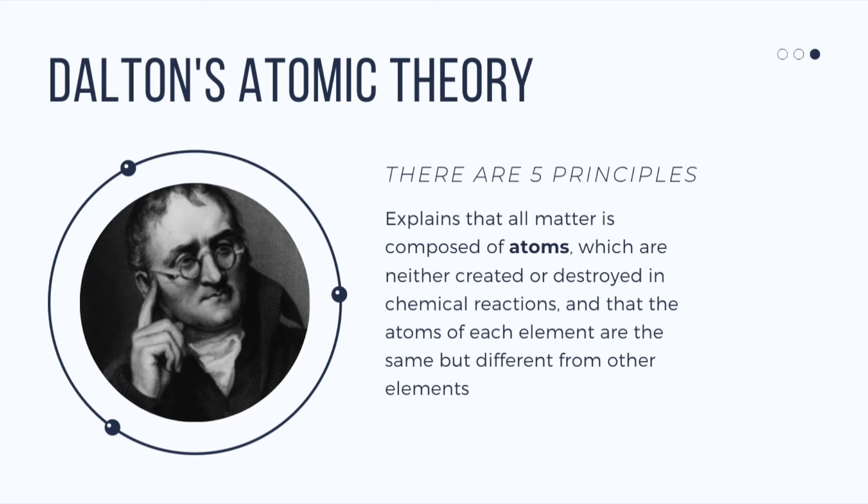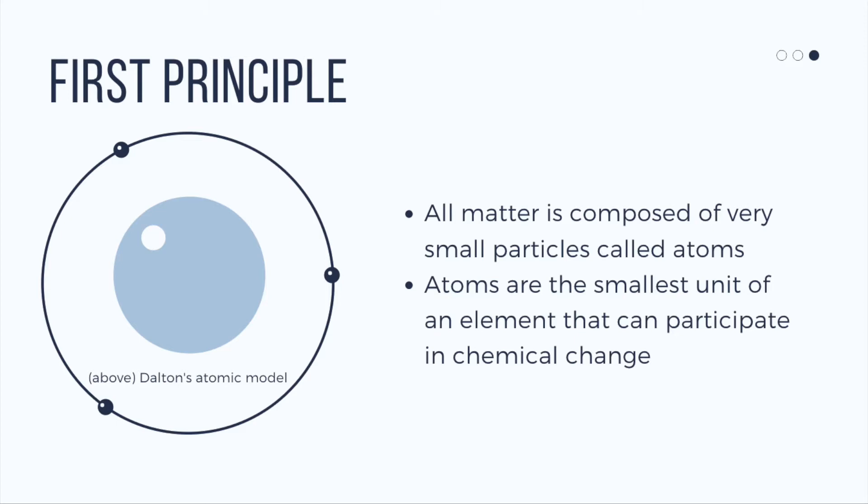The first principle: all matter is composed of very small particles called atoms. These atoms are the smallest unit of an element that can participate in chemical change. As you can see on the left is a picture of Dalton's atomic model.